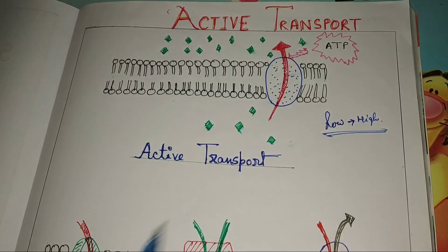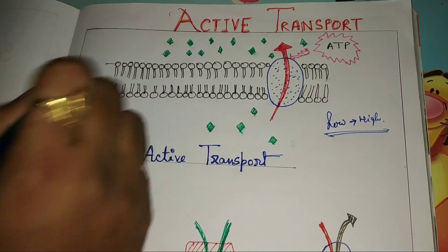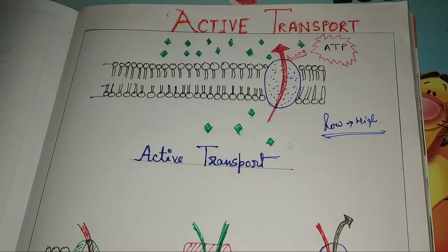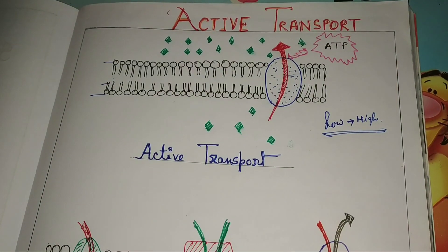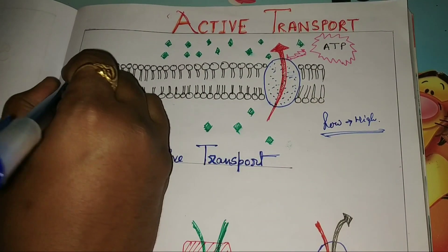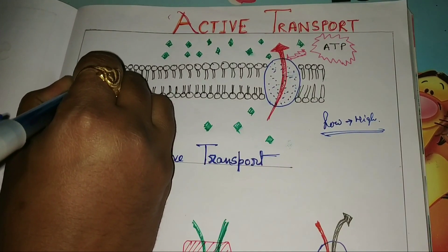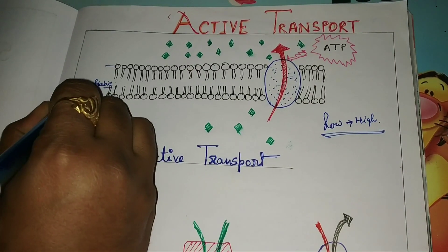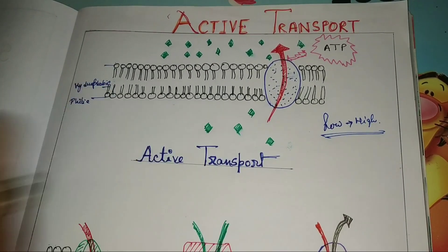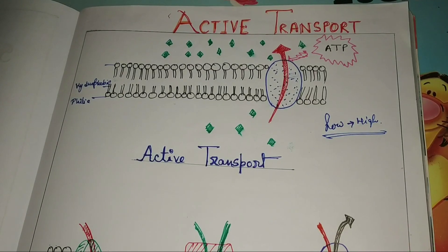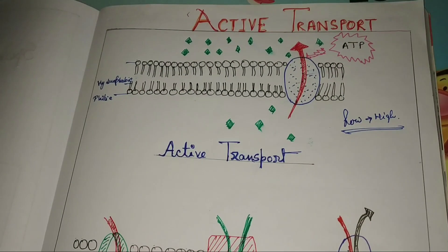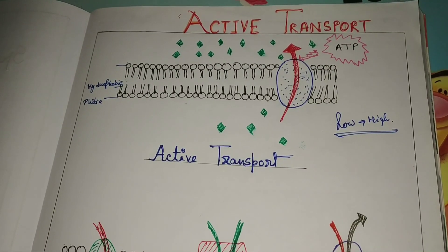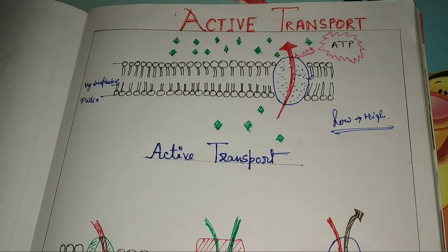Here you can see this is a plasma membrane structure. There is a head region known as the hydrophilic region and a tail region known as the hydrophobic region. Water can easily penetrate through the hydrophilic region but is unable to penetrate through the hydrophobic region.